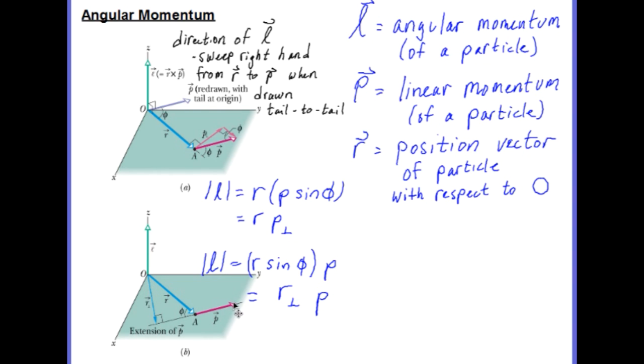When we talked about torque, this was called the line of action of the force. Now, because it's momentum, we're going to call it the extension. But it is still R perpendicular is the shortest distance from O to the extension.